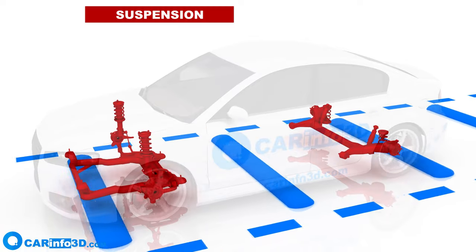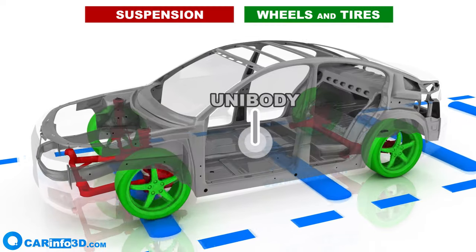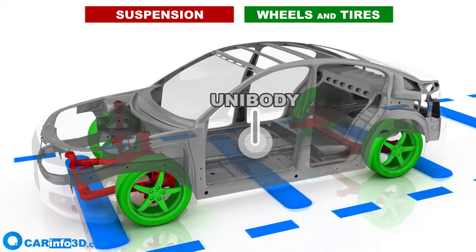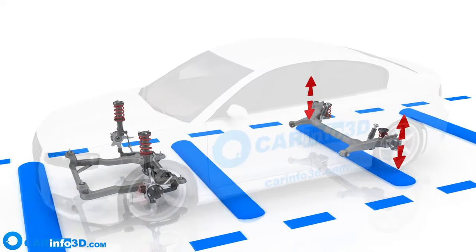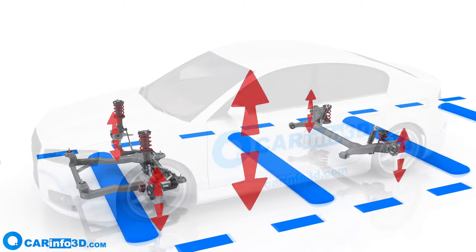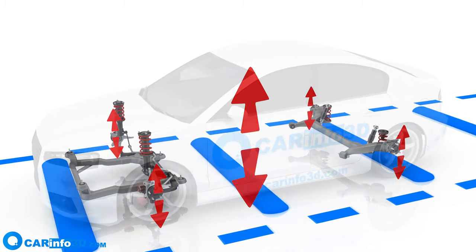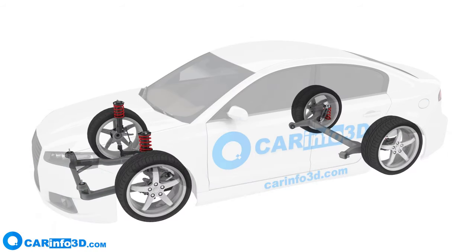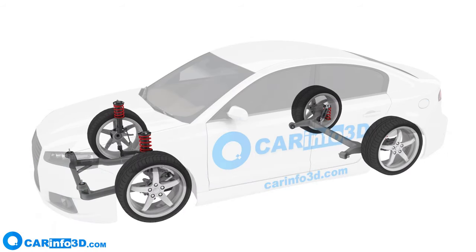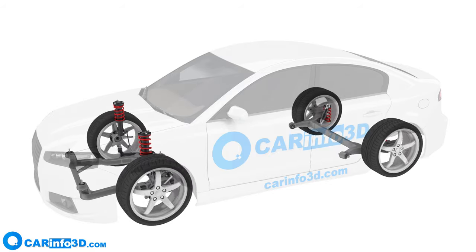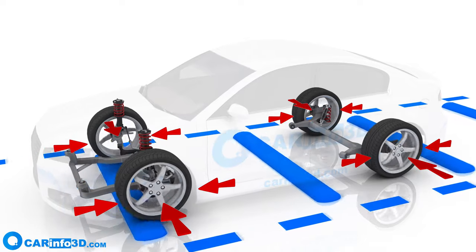The suspension joins a car's wheels to its body, absorbs and dampens the impacts of uneven road surfaces, dampens the vibrations of the body and wheels, allows relative motion between the wheels and the vehicle, and transfers forces acting on the wheels to the body.